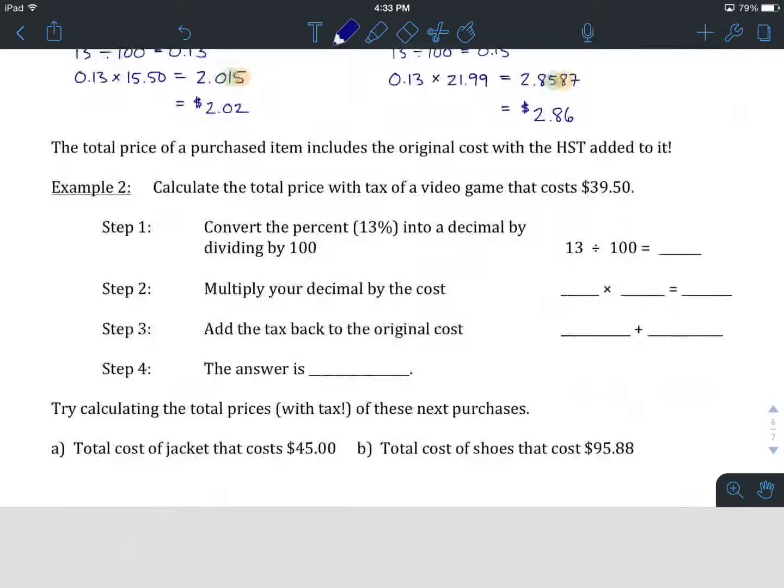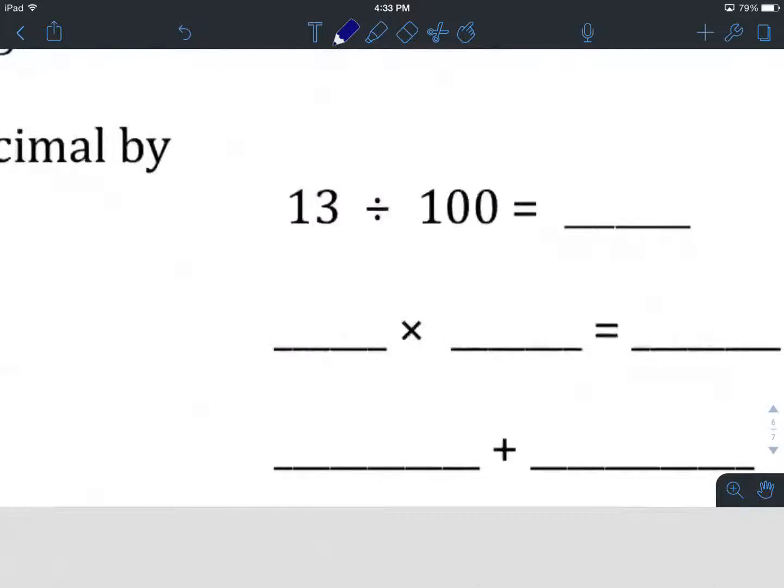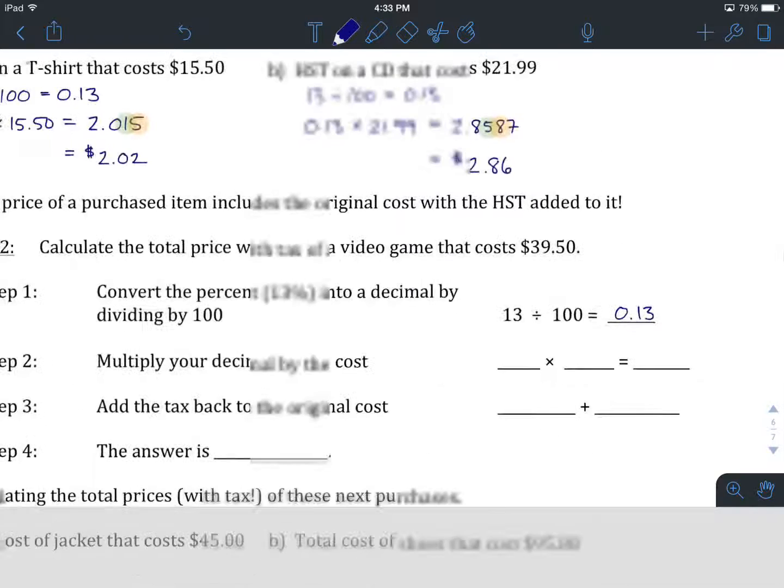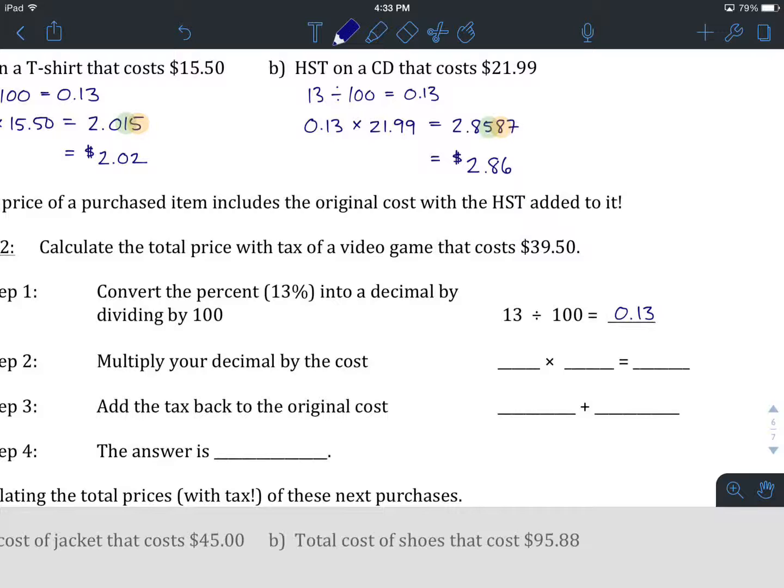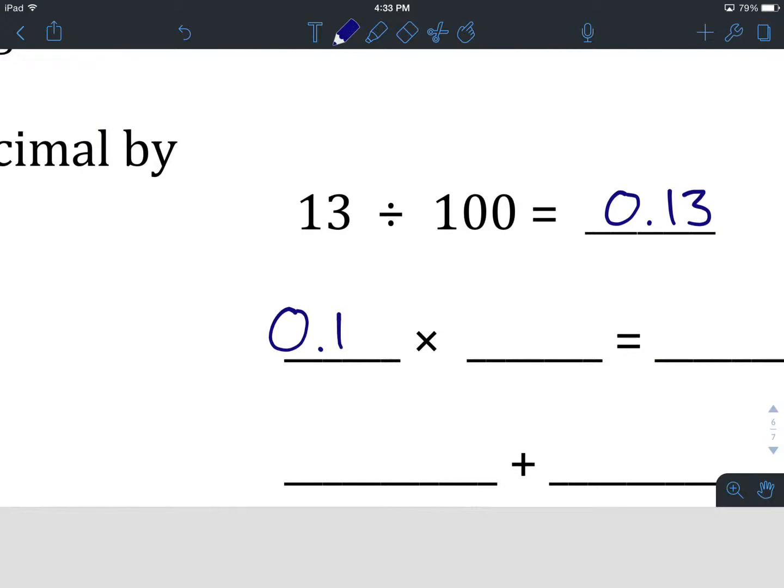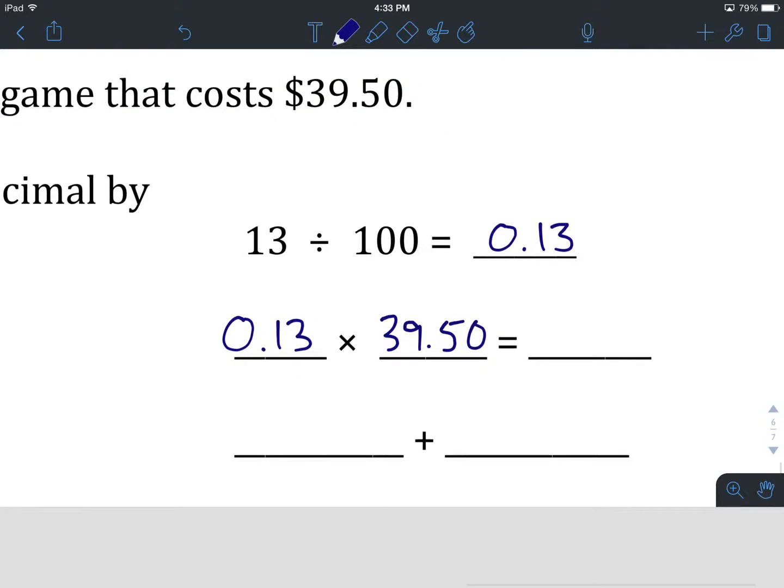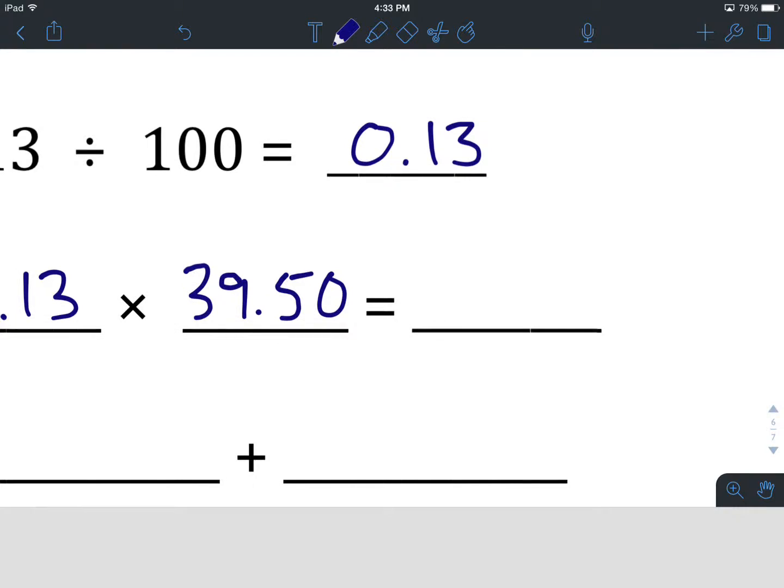Calculate the total price, with tax, of a video game that costs $39.50. First step is the same as always. If we're trying to calculate the HST, we want to take the HST percentage, which is 13, divide it by 100, which gives us 0.13. Step number two, we're trying to figure out the HST now. We take that decimal, 0.13, multiply it by the price of the item. We're talking in this question about a video game that costs $39.50. That's what we type into the calculator to find HST. 0.13 times $39.50, and that gives us 5.135.